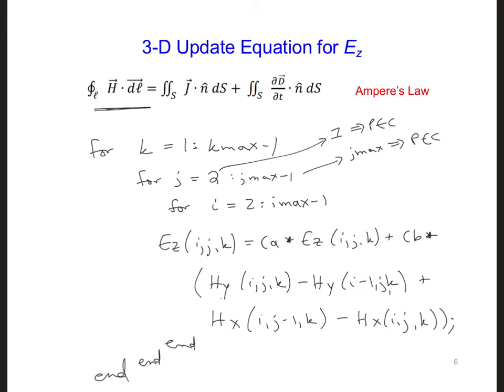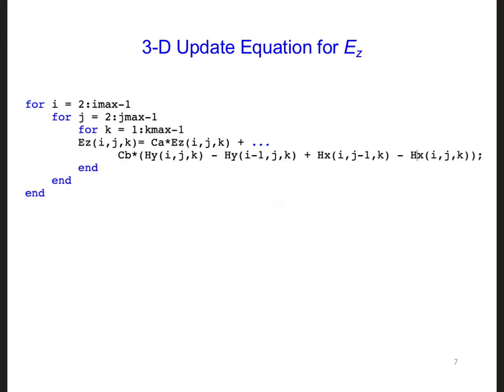Go ahead and have a look at this code. It has the same overall structure as the 1D and 2D models that we constructed earlier this semester. Here is the update equation we just created for the EZ component of the grid. Notice that these are reversed. I'm used to writing it this way for another programming language, so you can just reverse those.